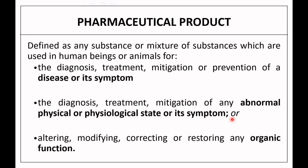What is a pharmaceutical product? There are many definitions. It is defined as any substance or mixture of substances which are used in human beings or animals for the diagnosis, treatment, mitigation, or prevention of a disease or its symptoms.